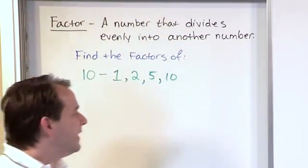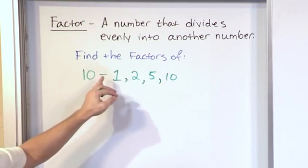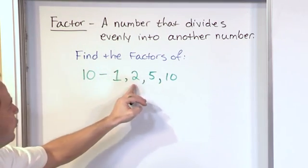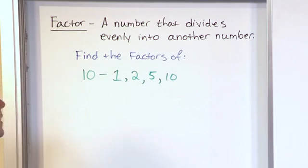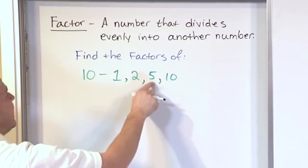So what we have here is a list of what we call factors. In this case, the factors of the number 10 are 1, 2, 5, and 10. These are all numbers that can be divided in evenly.